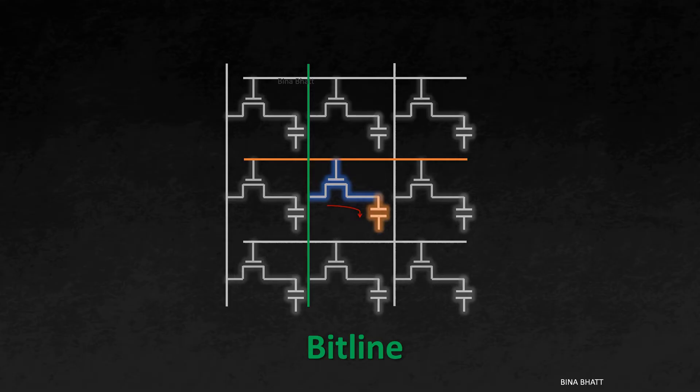Having known both these lines, let's understand how write operation is carried out. It's going to be pretty straightforward. Let's assume we want to write a bit value of 1 to this cell in the middle. First, the word line of the row containing this cell is asserted. Thus, the entire row gets selected.